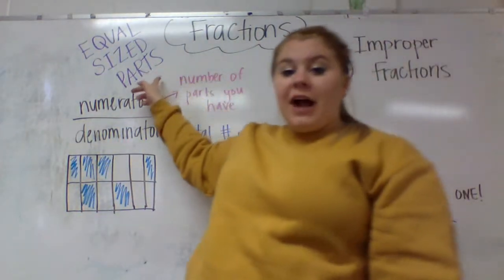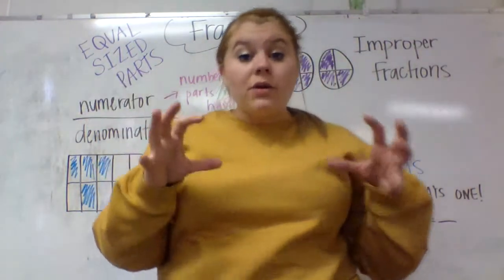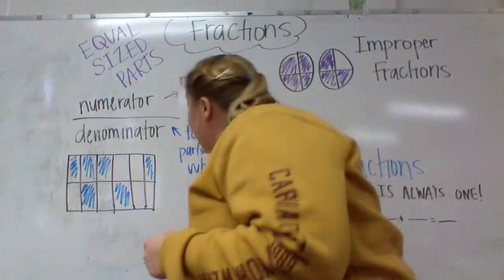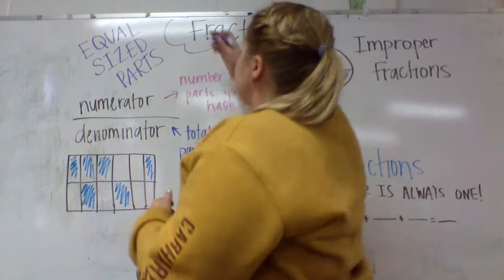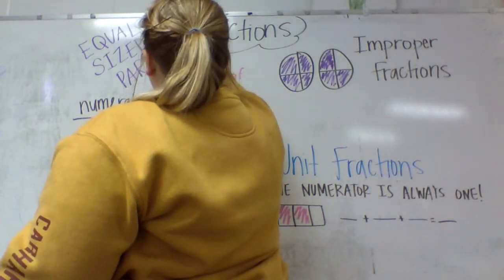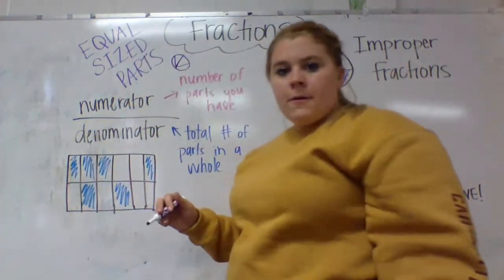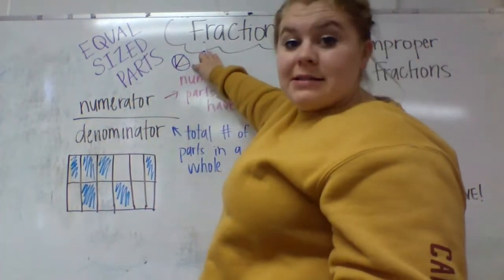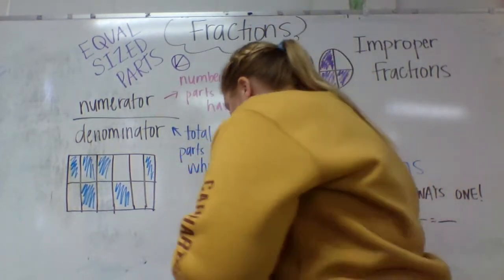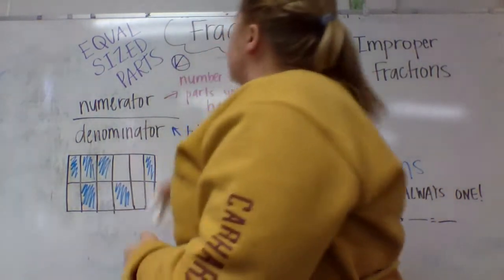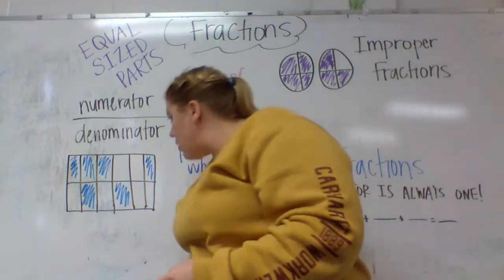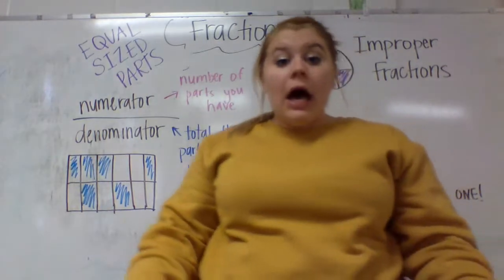One thing that's important about fractions is we know that they are equal-sized parts of a whole. If this is my whole — did I make equal-sized parts? Could I say each one of those are one-fourth? No, I can't. They're not equal. That would not be a fraction. In order to be considered a fraction, we have to have equal-sized pieces of one whole.